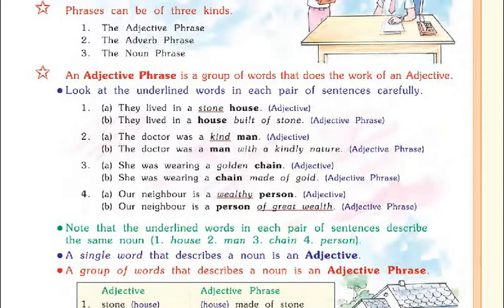An adjective phrase is a group of words that does the work of an adjective. Adjective phrase matlab ke jo adjective ka kaam karta hai. Look at the underlined words in each pair of sentences carefully. For example: 'They lived in a stone house.' Here the word 'stone' is an adjective, and 'a house built of stone' is the adjective phrase. 'They lived in a house built of stone.'